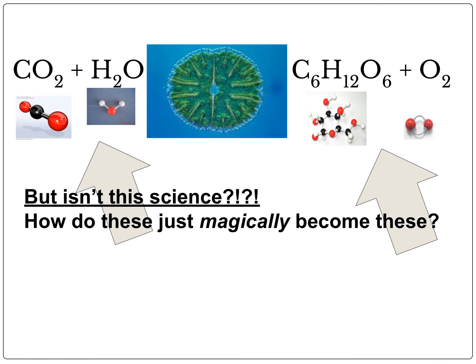As science students, you need to be skeptics at times. Just because we're saying things, if it doesn't make sense to you initially, it's our job to explain it. This is science. So how does CO2 and water just magically go into a plant cell and all of a sudden make sugar and oxygen? How does that happen? Is it magic?